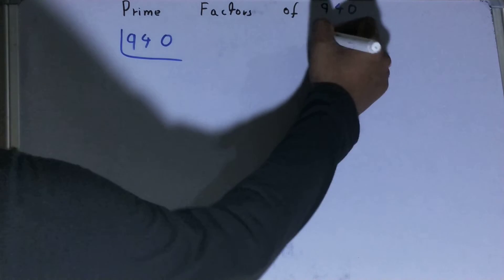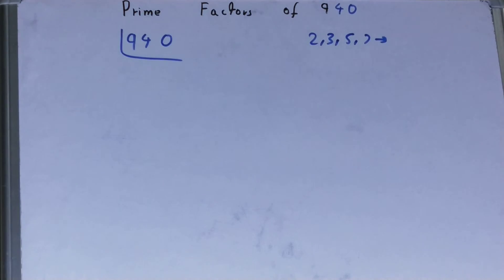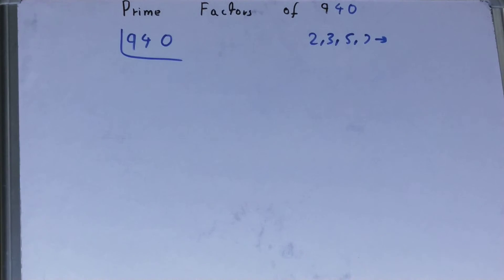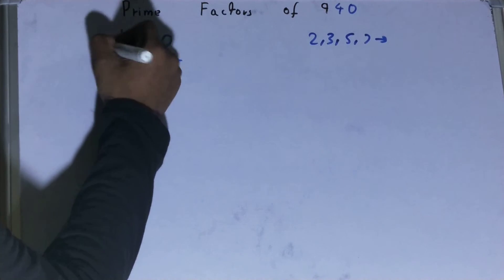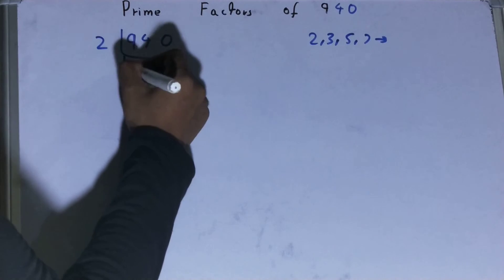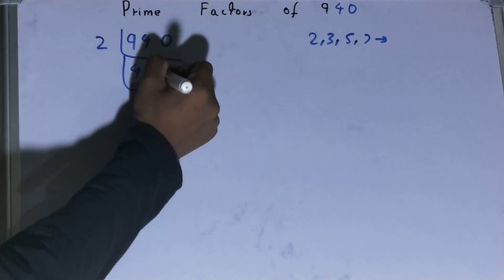Like 2, 3, 5, 7, and so on. We'll be starting with the lowest prime number we have, that is 2. Is the number 940 divided by 2? Yes, it is, because 940 is an even number. So divide it and you will be left with 470.